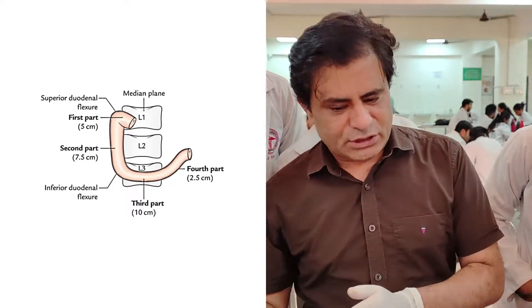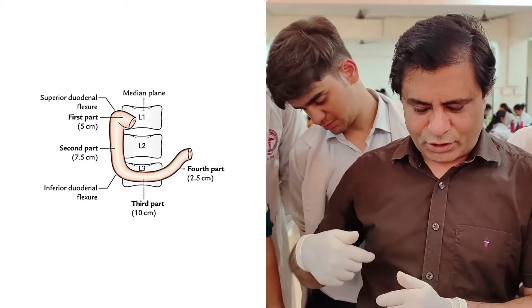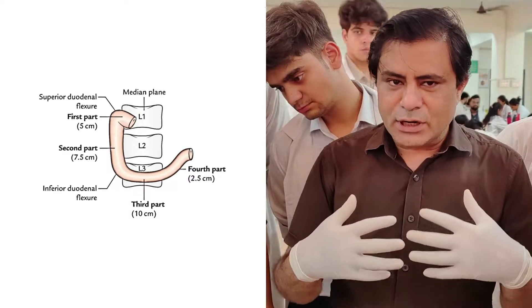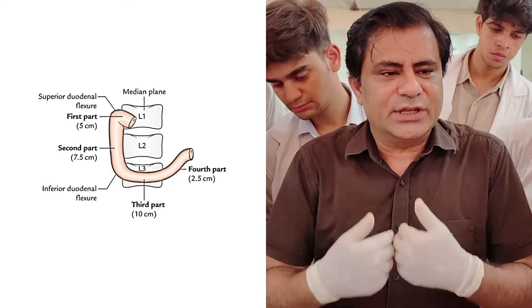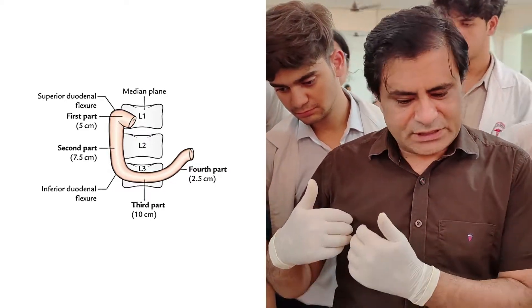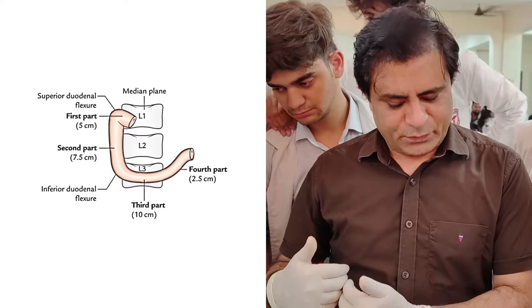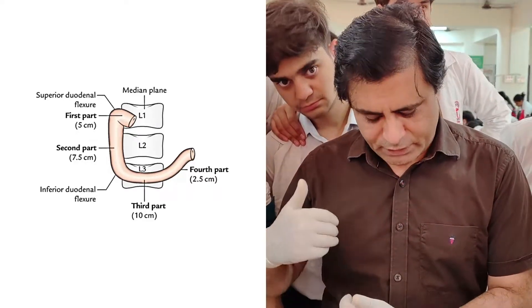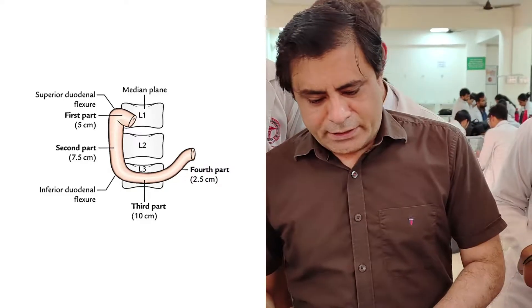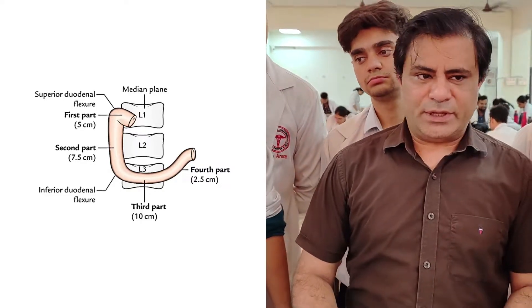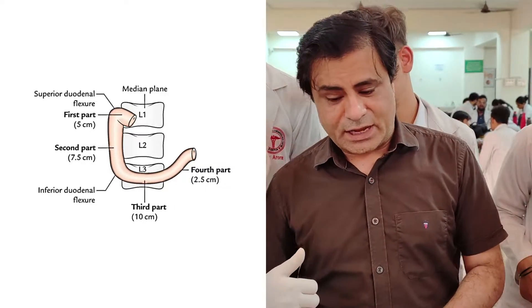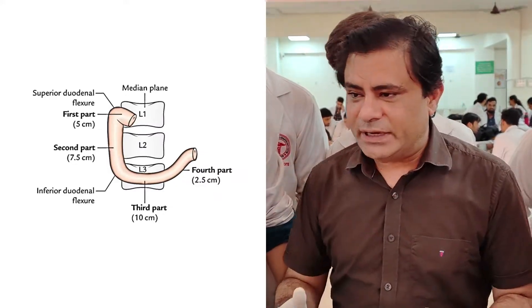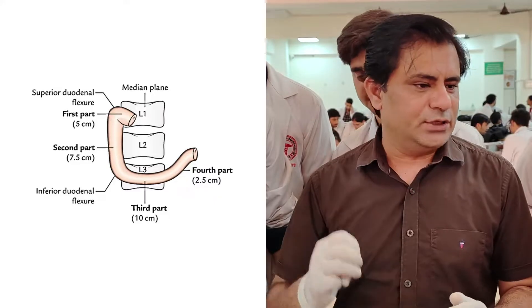The second part descends and will cross L1, L2, and reach opposite L3 vertebra — so the total duodenum spans L1, L2, and L3. The second part lies on the right side of the spine from L1 to L3. It has a length of about 7.5 cm, which equals 3 inches. Then there is another flexure at the bottom.